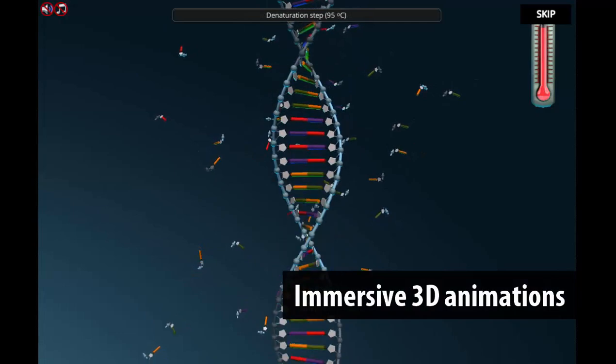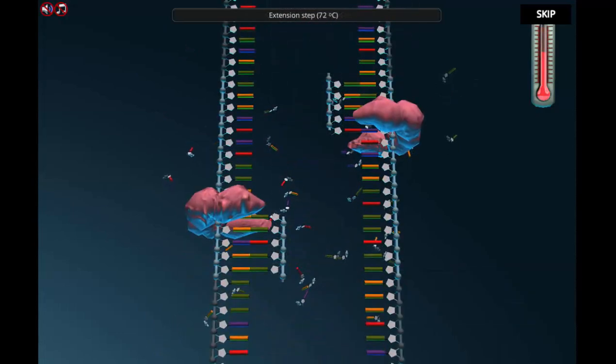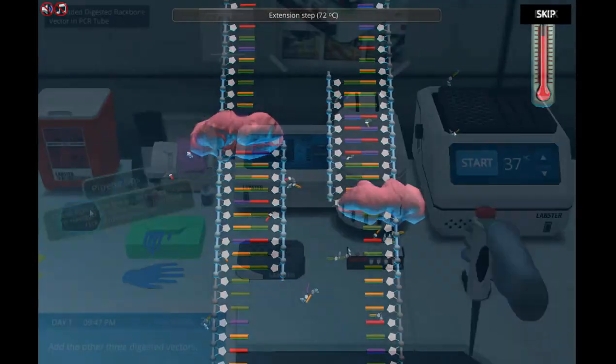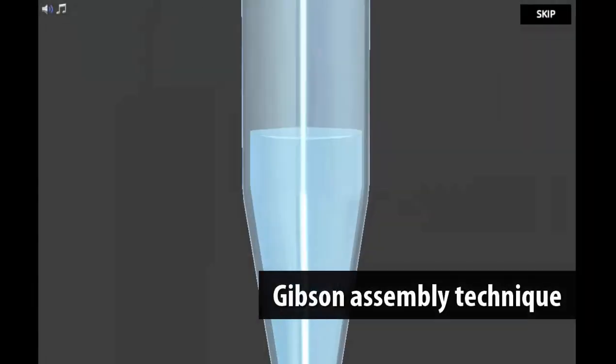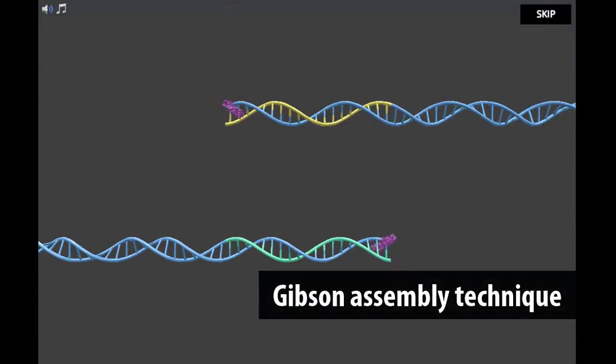Supplementary 3D animation illustrates what happens on the molecular level. After purifying the DNA fragments with magnetic beads, they will clone the plasmid vector with the Gibson assembly technique.